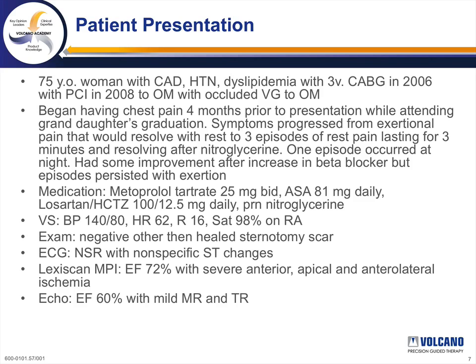She was on low-dose beta blockade, aspirin, losartan hydrochlorothiazide, and PRN nitroglycerin. On exam, her blood pressure was 140/80, heart rate 62, respiratory rate 16, and oxygen saturations were normal on room air. Her EKG was nonspecific. She had an echocardiogram showing normal ejection fraction with mild valvular disease, and underwent a Lexiscan nuclear perfusion study that showed normal ejection fraction with severe anterior, apical, and anterolateral ischemia.